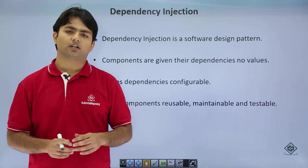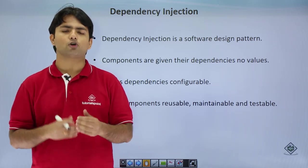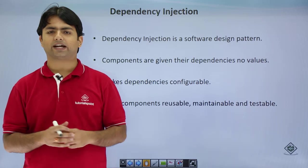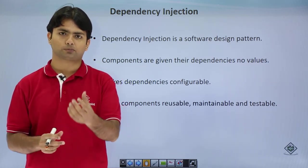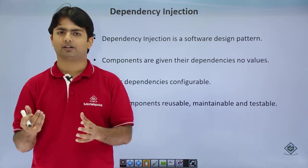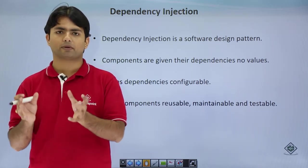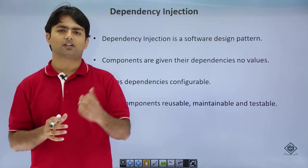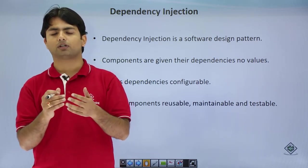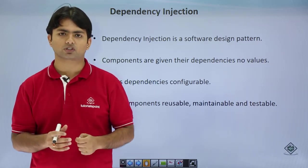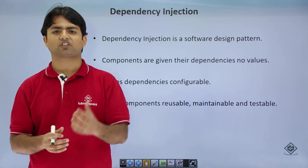Dependency injection is a software design pattern. As we have something called the SOLID principle in object-oriented development, where S stands for single responsibility — we need to make sure whenever we write any chunk of code it should have a single responsibility, so we can use it anywhere as an independent unit. If you give multiple responsibilities to a block, you may not be comfortable reusing it. This is how you apply single responsibility, which we have also seen in functions.